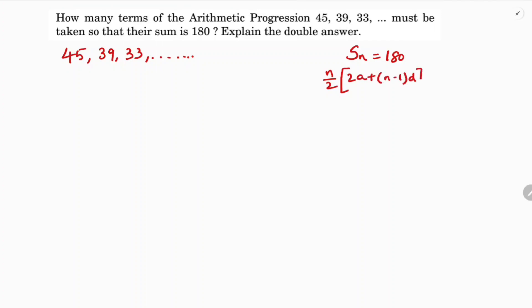Now here in the series, the value of a is 45. D is a2 minus a1, 39 minus 45, which is minus 6. Now if I'll substitute the values in this, I just need to find the value of n.